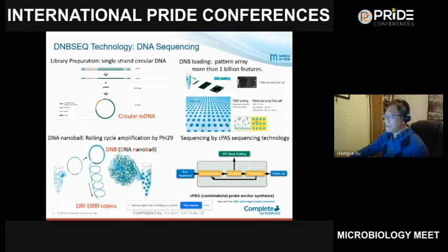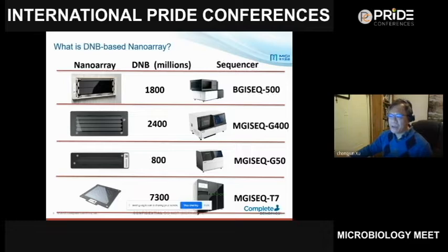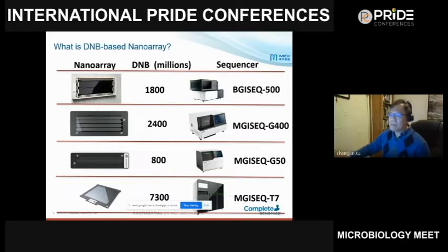The flow cell is designed so that each binding site can only attach one DNB, so we have a large number of individual DNBs on the flow cell for DNB sequencing. BGI has developed several different sequencers: the BGI-Seq 500, BGI-Seq T400, BGI-Seq T50, and BGI-Seq T7, each using different flow cells. For example, the T500 has 1.8 billion DNBs on two chips, while the T7 has 7.3 billion individual DNBs on the chip.